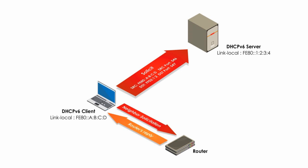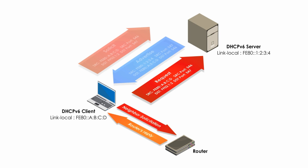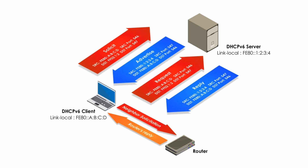The DHCPv6 server replies with Advertise, offering necessary addressing information. Then the client sends a Request, and the server responds with Reply. Please notice the destination address uses link-local addresses of each other in the Advertise, Request, and Reply packets.